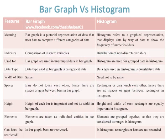Bar graph versus histogram. The meaning of bar graph is a pictorial representation of data that uses bars to compare different categories of data, while histogram refers to a graphical representation that displays data by way of bars to show the frequency of numerical data. Bar graphs indicate comparison of discrete variables while histogram indicates a distribution of non-discrete variables.